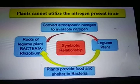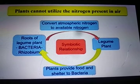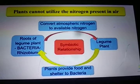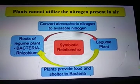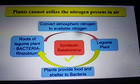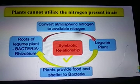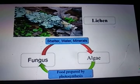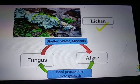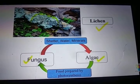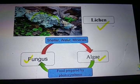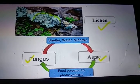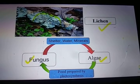Rhizobium bacteria, which live in the root nodules of legume plants, convert atmospheric nitrogen into available nitrogen. In return, the legume plant provides food and shelter to the bacteria — this kind of relationship where one organism depends on another is known as a symbiotic relationship. Another example is lichen, where fungus and algae live together: the fungus provides shelter, water and minerals to the algae, and the algae in return provide food prepared by photosynthesis to the fungus.